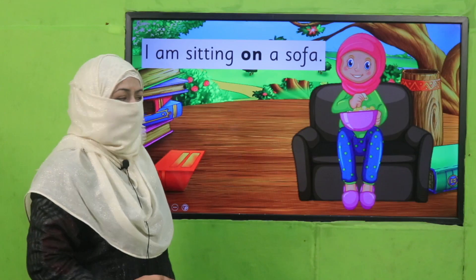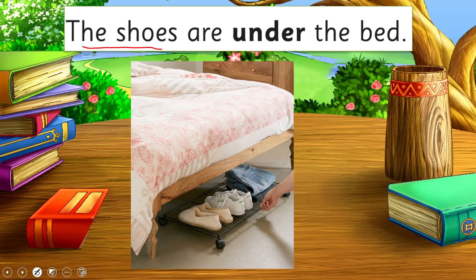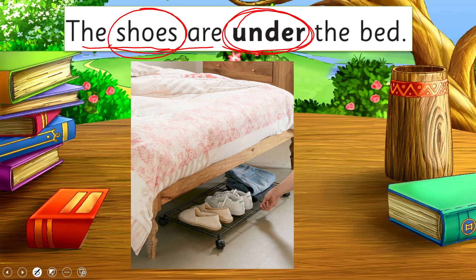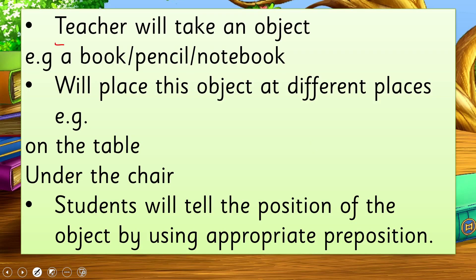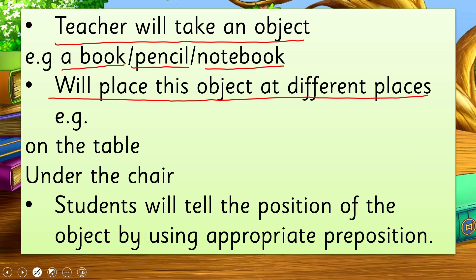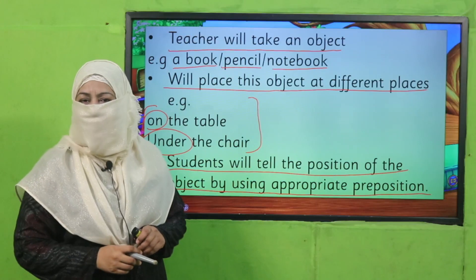Here are examples from your book: 'I am sitting on a sofa.' 'The shoes are under the bed' — here 'under' tells us the position of the shoes. Now let's practice through an activity: the teacher will take an object — a book, pencil, or notebook — and place it at different positions, for example on the table or under the chair. The teacher will keep changing the position, and students will tell the position using the appropriate preposition. Pause the video, enjoy the activity, and then come back.